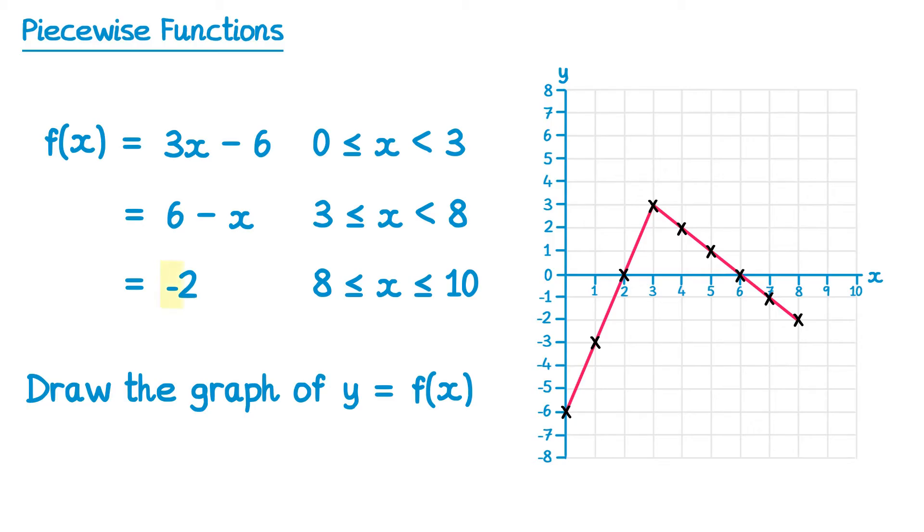Now we move on to the last part of the function, when f of x equals negative 2. This is just a horizontal line at negative 2, like this. But we only want the x values here to be between 8 and 10. So we can remove all of the points before 8, like this. We've now completed the graph of y equals f of x. It should hopefully be clear why this is a piecewise function, because the function is made up of 3 different pieces.